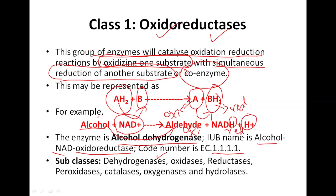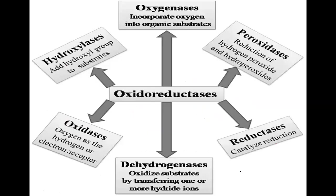The subclasses of oxidoreductases include: dehydrogenases, which transfer one or more hydride ions; oxidases, where oxygen is the hydrogen and electron acceptor; reductases, which catalyze reduction reactions; peroxidases, which catalyze the reduction of hydrogen peroxide and hydroperoxides; oxygenases, which incorporate oxygen into organic substances; and hydroxylases, which add a hydroxyl group to the substrate.